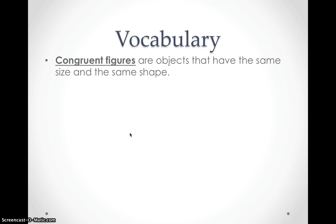So to start with our vocabulary, we're just going to look at congruent figures, which are objects that have the same size and the same shape. So here I have two triangles, which are obviously the same shape, and they are the same size.